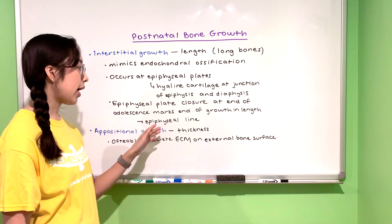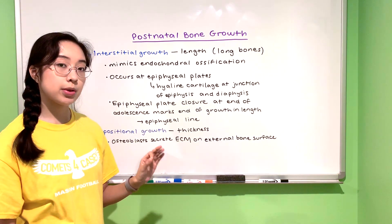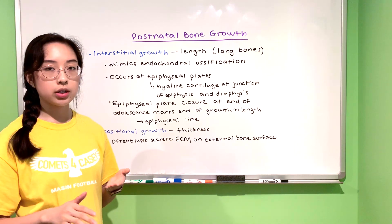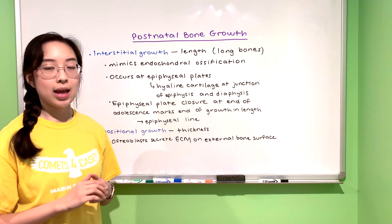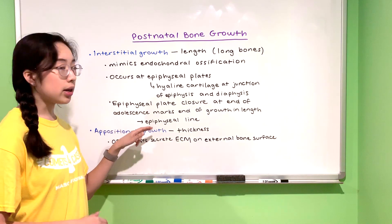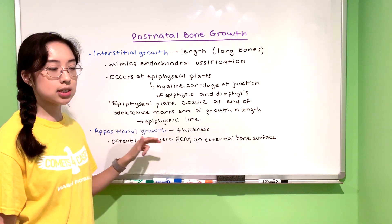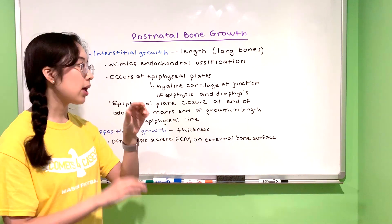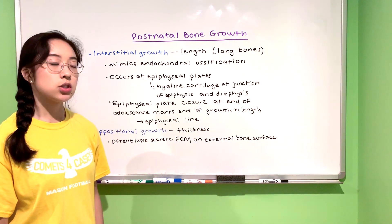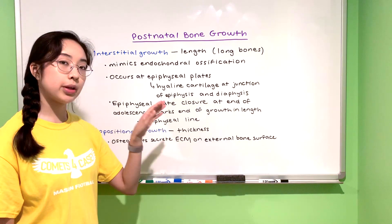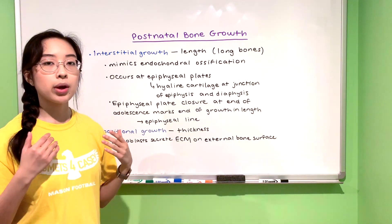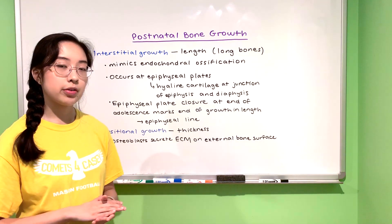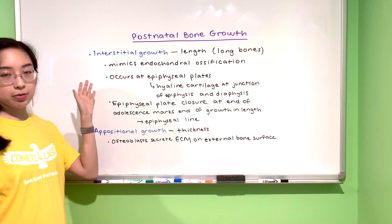At the end of adolescence the epiphyseal plate undergoes something called closure, and that is when all of the cartilage has turned into bone and the epiphyseal plate becomes what's called an epiphyseal line — just a part of compact bone in between two regions of spongy bone at the junction of the epiphysis and diaphysis. After your epiphyseal plate closes, that bone can no longer grow in length, and that is the height you end up being for all of your adulthood.